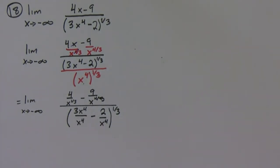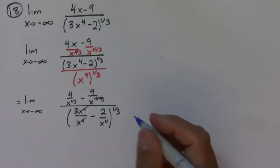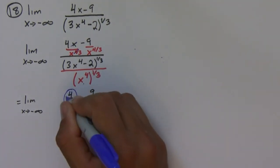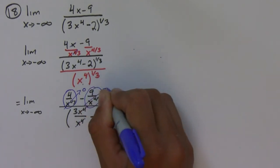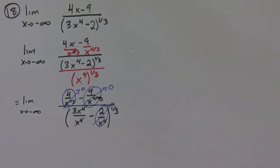Now these guys cancel, and so this guy is going to zero, this guy's going to zero, and this guy's going to zero. So that means that we have zero over three, which is the only thing that's left over, to the one-third. Well, this is just equal to zero.